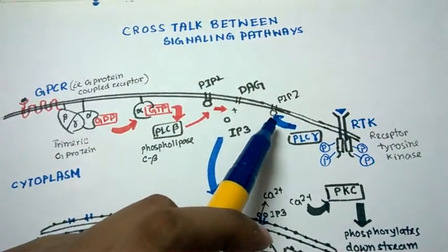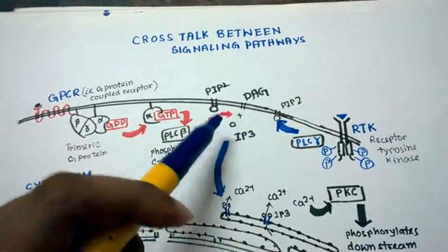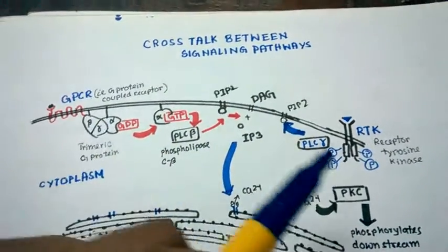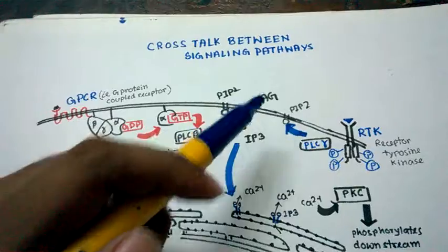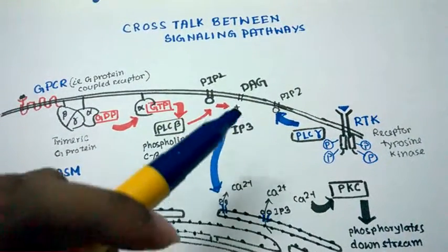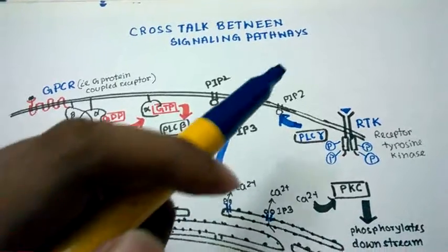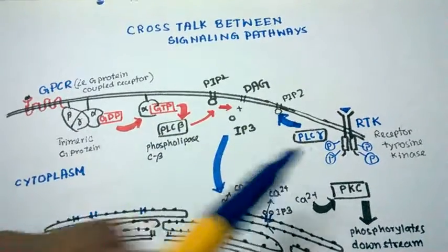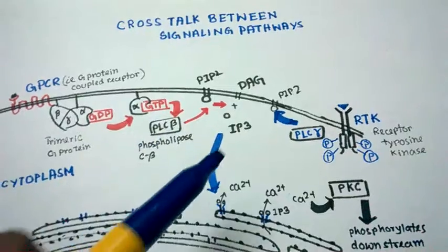When phospholipase gamma is activated, it also cleaves PIP2 and generates IP3 and DAG. Both signaling pathways ultimately generate IP3 and DAG, the molecules on which these two pathways overlap.